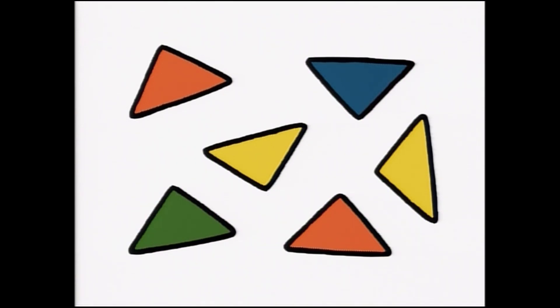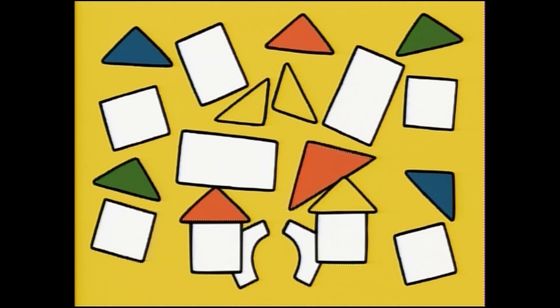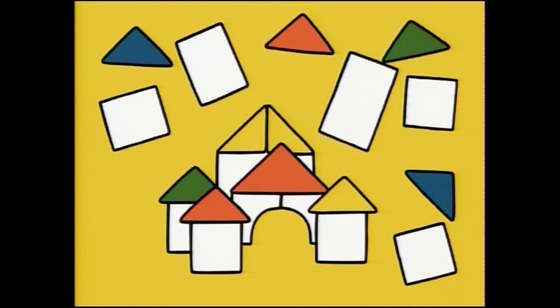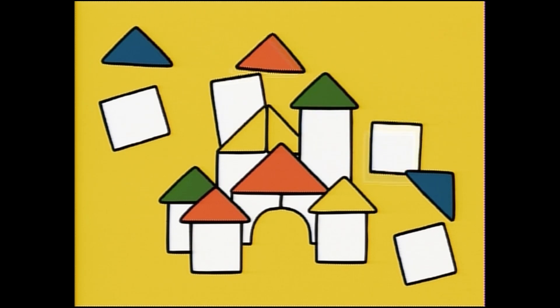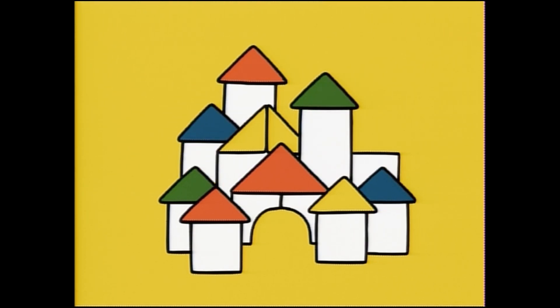Here are many triangles and many squares. What can they be? They are piling up higher and higher. It's a castle made of blocks.